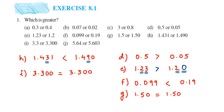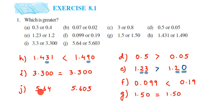The last question: 5.64 and 5.603. Remember, the number of digits after the decimal point doesn't determine which is greater — we have to check the place value. The whole parts are both 5. The tenth place is 6 in both. The hundredth place: here we have 4 and here we have 0. Four is greater, so 5.64 is greater than 5.603.